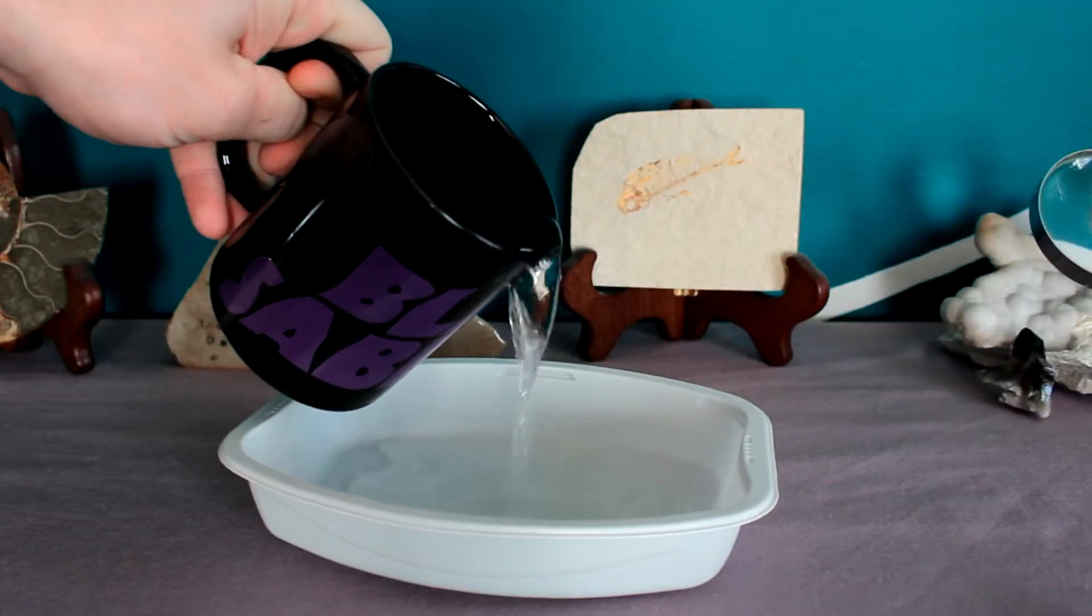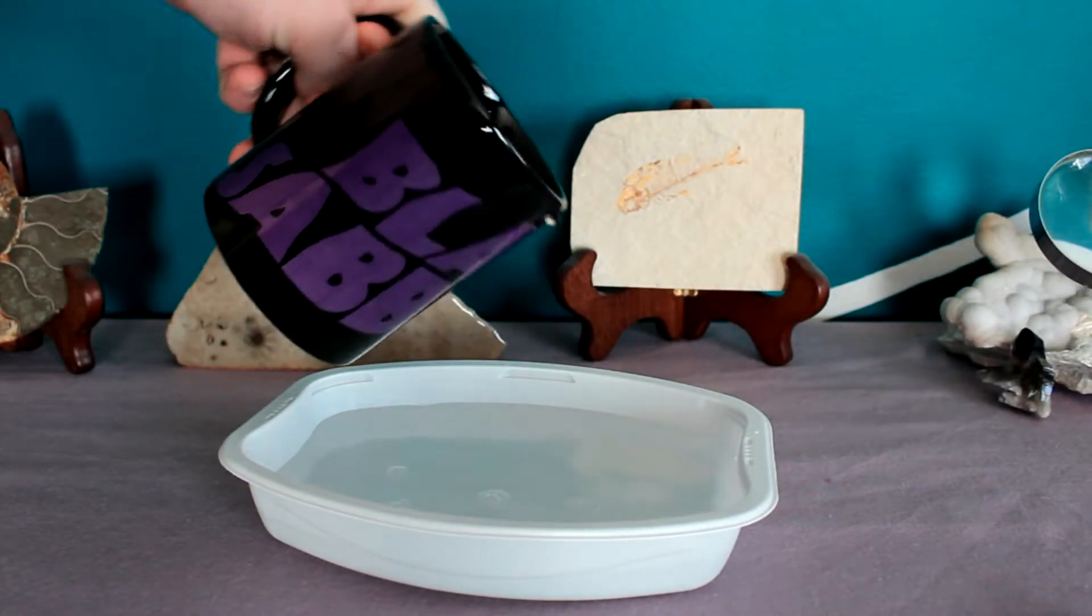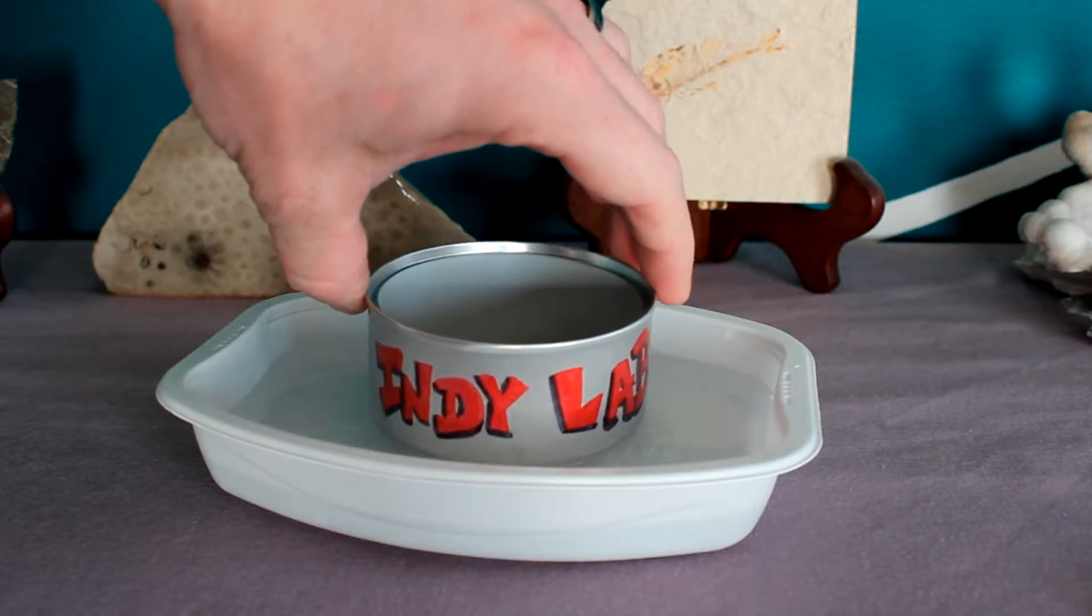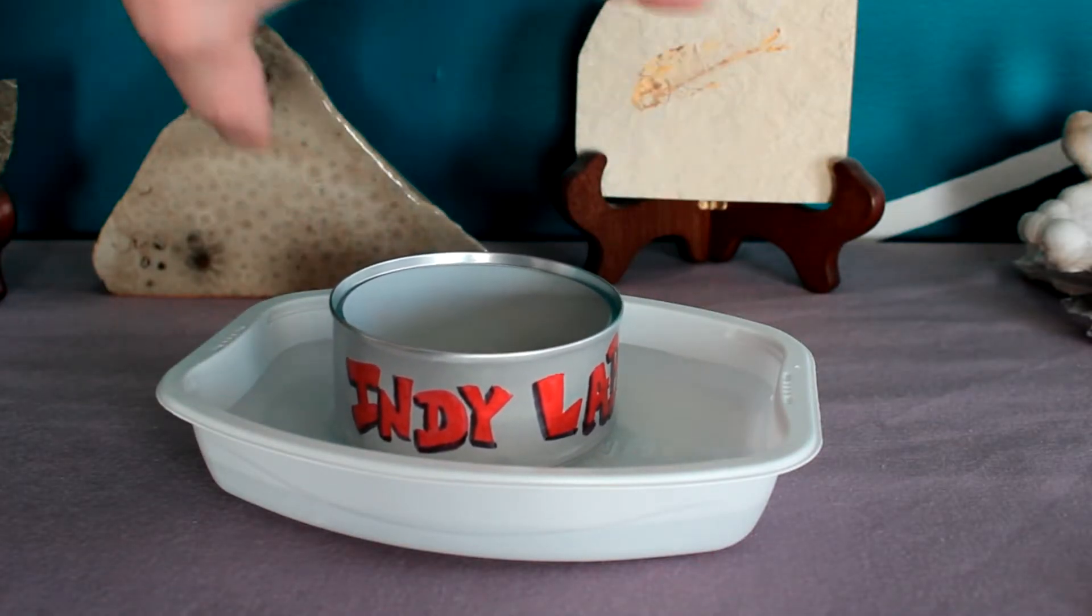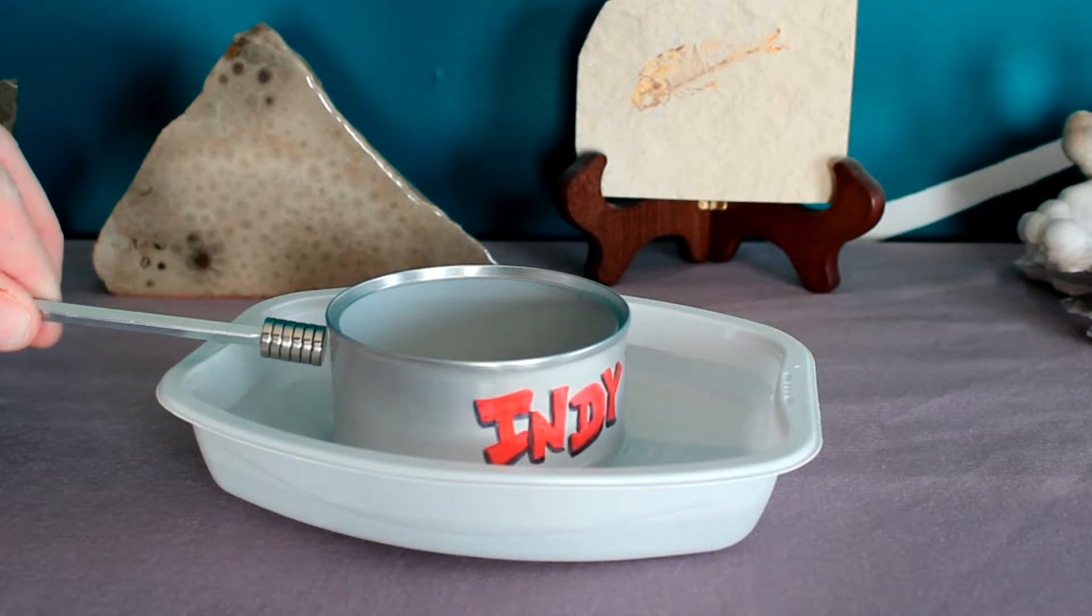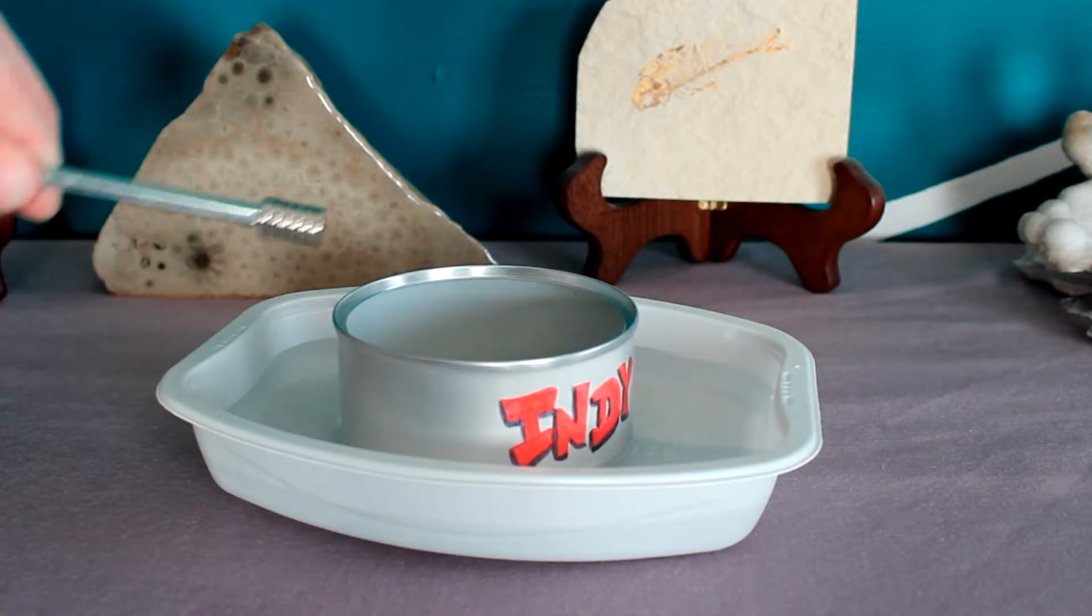Alright, got your stuff? It's time to induce. Start off by placing a small amount of water in your dish. This is just to give our empty aluminum can a near frictionless surface to float on. And it's worth noticing here that your magnets will not attract the aluminum can.